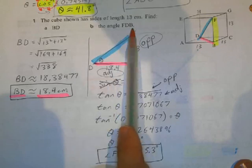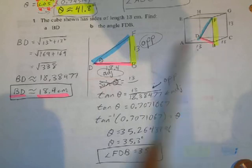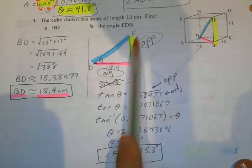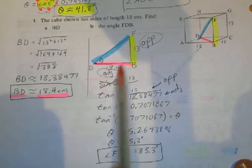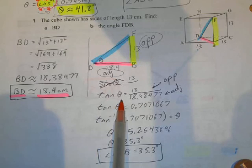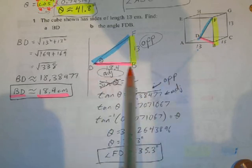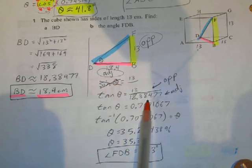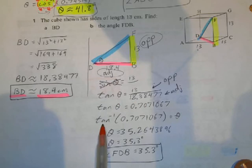And we're trying to find the angle between F, D, and B. So F, D, and B is already drawn for you. So I already know the opposite side is 13. The adjacent side is 18.4. Using opposite and adjacent, I could use tangent to solve this problem. So now we've got 13 is the opposite side. The adjacent side is 18.38. Divide those together. Inverse tan. So I hit the second button in tangent. And then I get my angle is 35.3.